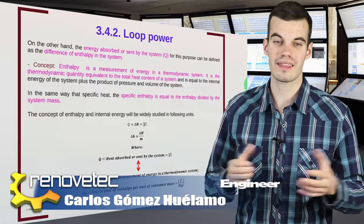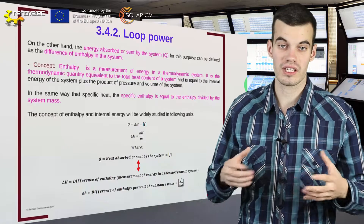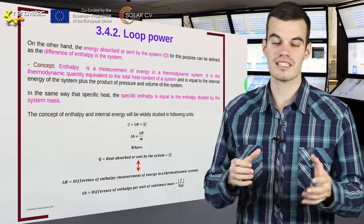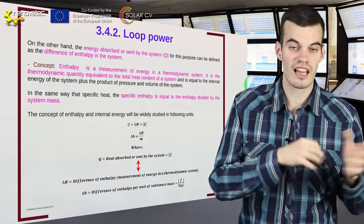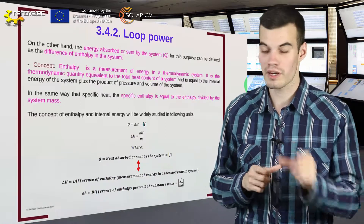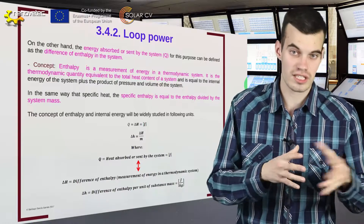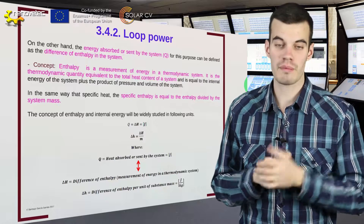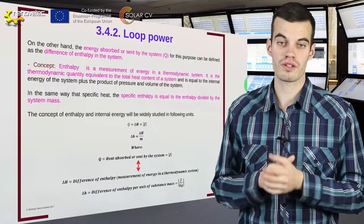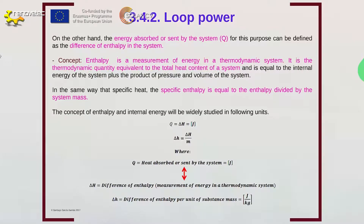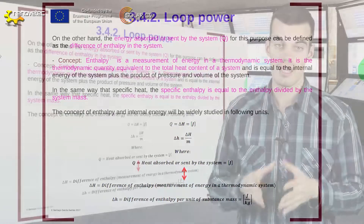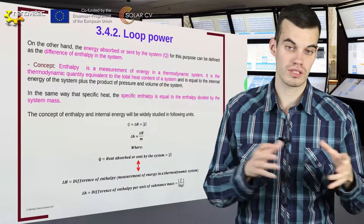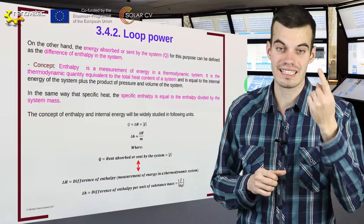On the other hand, we must understand what is enthalpy. Enthalpy is a measurement of the energy of a thermodynamic system, and it is the thermodynamic quantity equivalent to the total heat contained in a system. It is equal to the internal energy plus the product of pressure and the volume of a fluid — in this case, the HTF pressure and the HTF volume. For our purposes, we can define the difference of enthalpy as the heat absorbed or sent by the thermodynamic system. Specific enthalpy is the enthalpy divided by the mass of the substance, so it is the total heat contained in just 1 kilogram of substance.